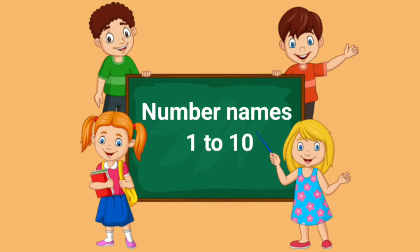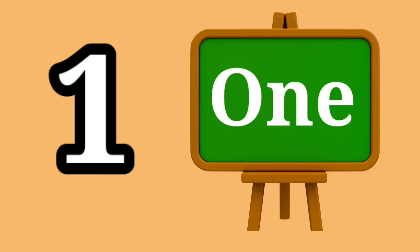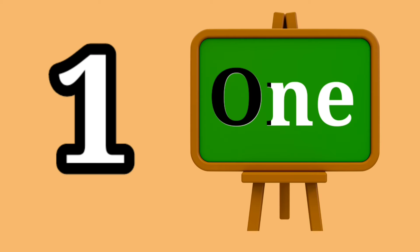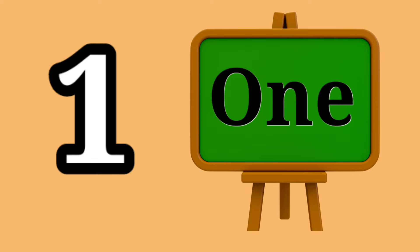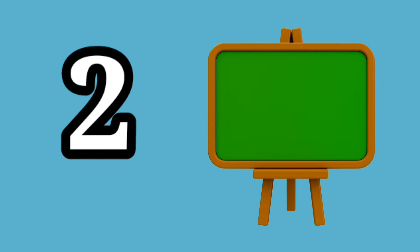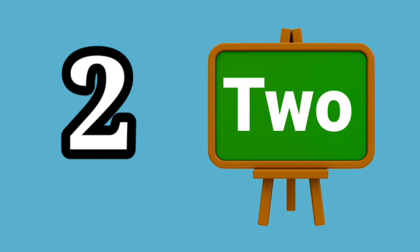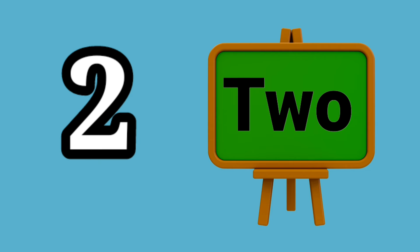Number Names From 1 to 10. Number 1 — One, spelled O-N-E. Number 2 — Two, spelled T-W-O.